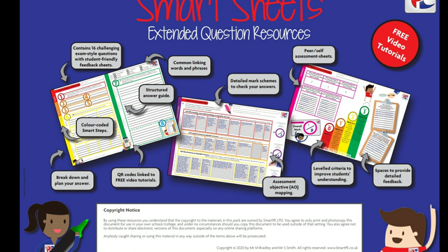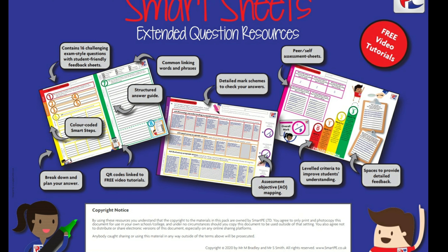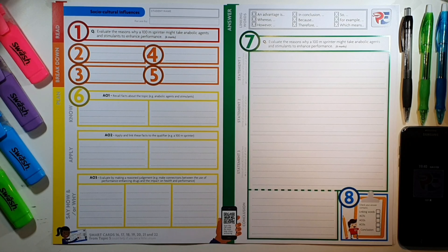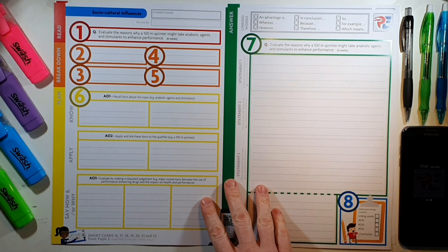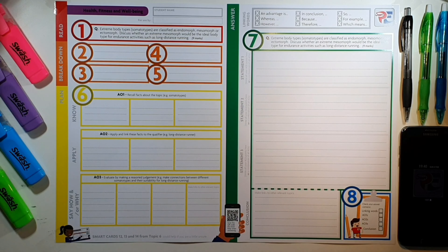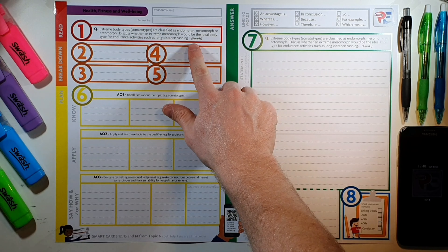SmartP are pleased to have announced the release of their AQA specific Smart Sheets. This is an electronic PDF extended question resource which has a combination of both 6 and 9 mark questions.